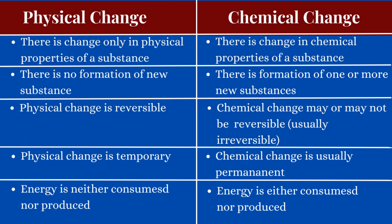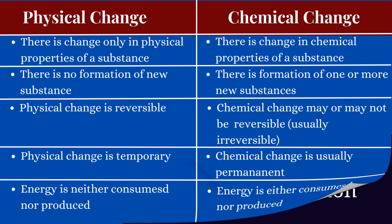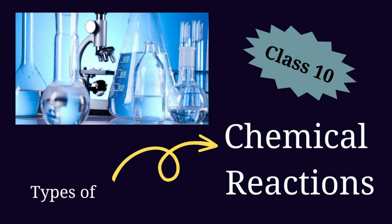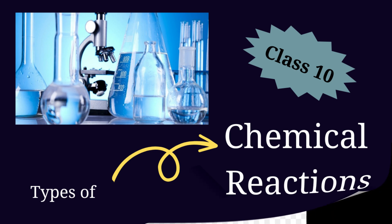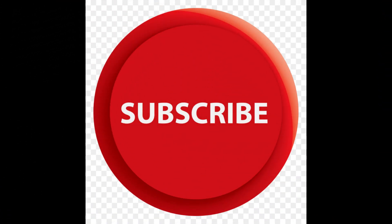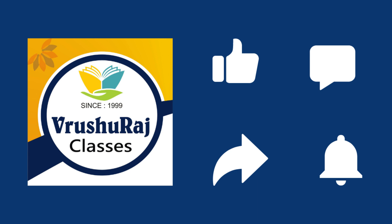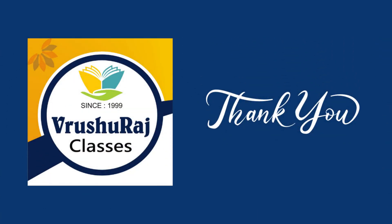These examples have made it more clear what is the difference between physical change and chemical change. Whenever there is a chemical change it is associated with a chemical reaction, and in our upcoming videos we are going to learn more about chemical reactions. Subscribe our channel to get regular updates, and please do share this video among your friends. Thank you so much for watching.